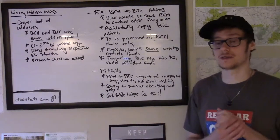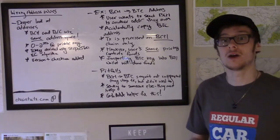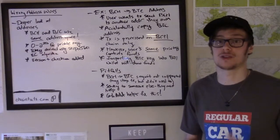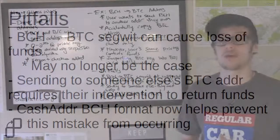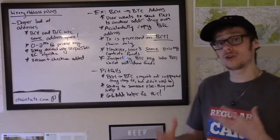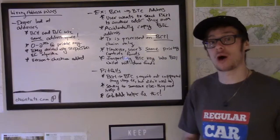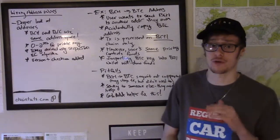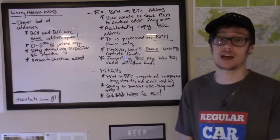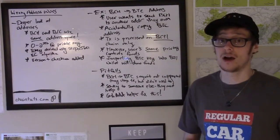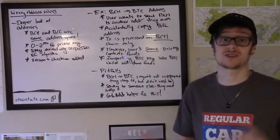A much more serious problem: around the time of the Bitcoin Cash fork, Bitcoin started supporting segregated witness (SegWit) transactions and addresses, but Bitcoin Cash developers chose not to support SegWit on their chain. If you copy a Bitcoin BTC SegWit address and try to send a transaction to it on the BCH blockchain, it becomes nearly impossible to unlock those funds because that address type isn't supported by Bitcoin Cash. Those funds can end up effectively locked and lost — though modern Bitcoin Cash wallets may now block such transactions from going through.